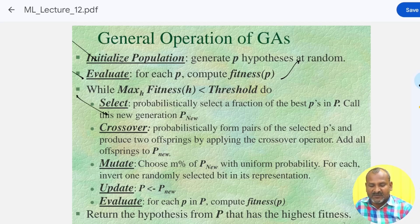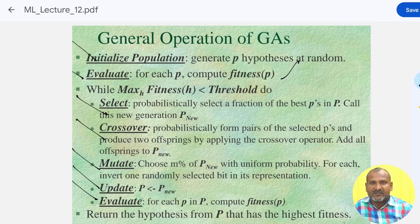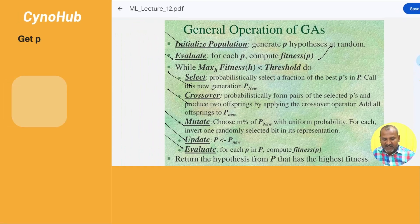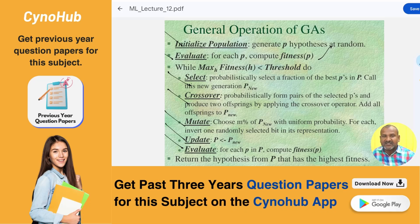The five main steps are: first, selection; second, crossover; third, mutate; fourth, update; and fifth, evaluate. Finally, we return the hypothesis from the population that has the highest fitness function. These five functionalities are performed after initializing the population.